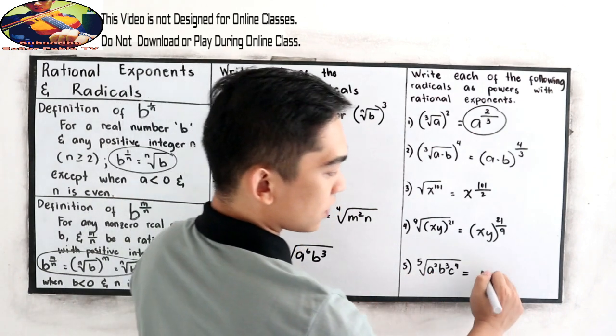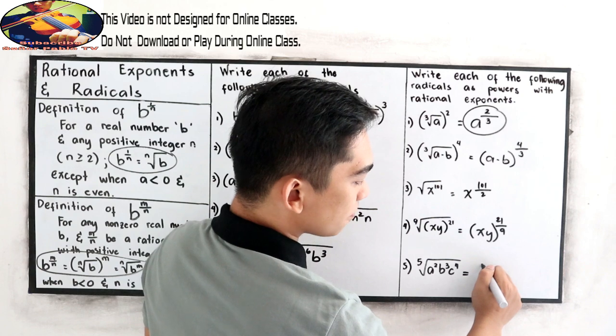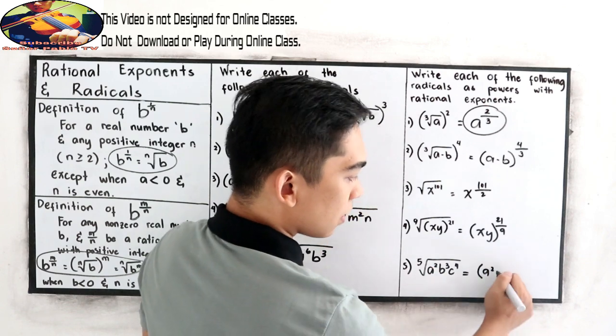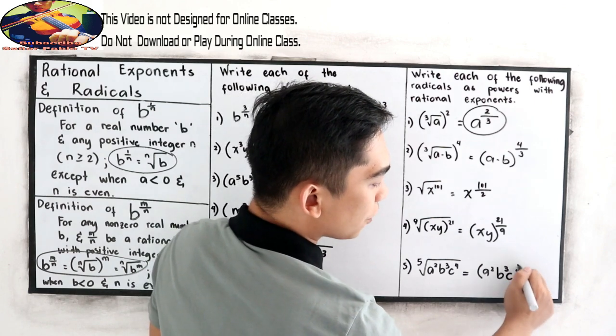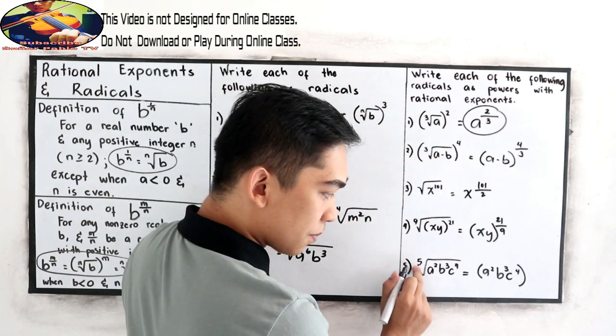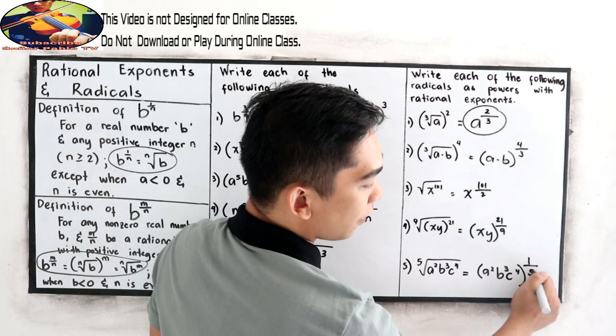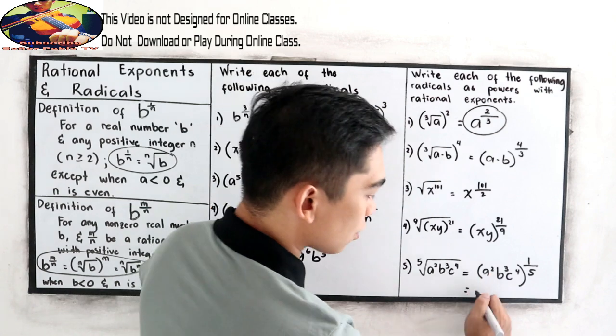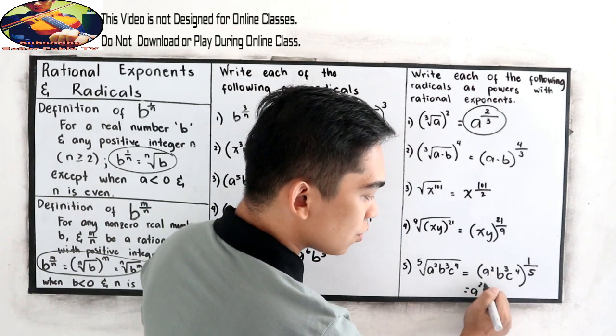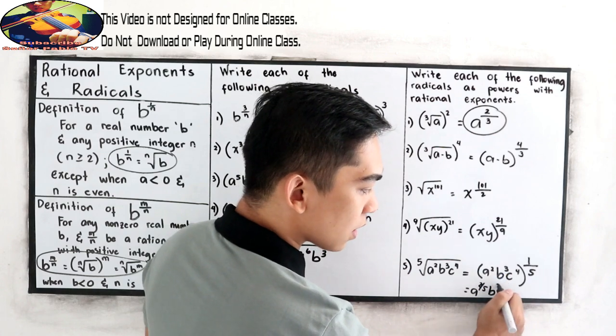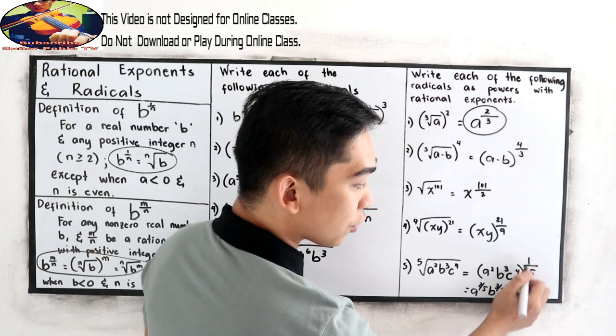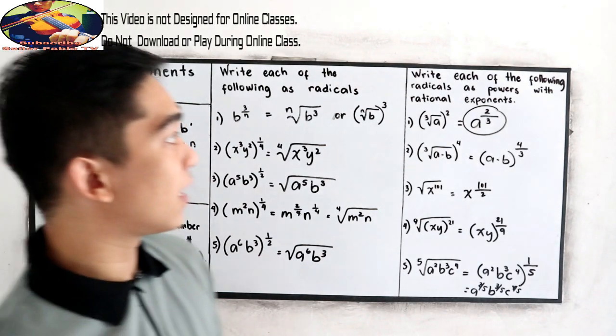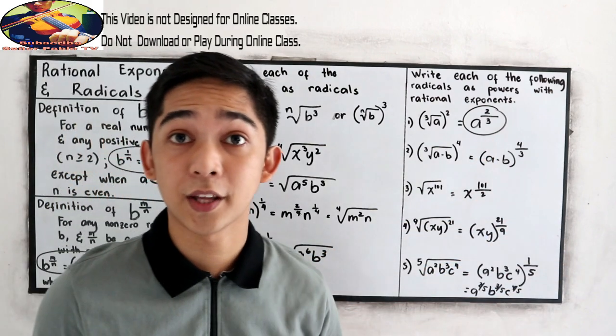And number 5, we have A squared B cubed C raised to 4. This will be our denominator, will be equal to 1 over 5. Or if you want, we can write that as laws of exponent. So A, 2 times 1, that is 2 over 5. B, 3 times 1, 3 over 5. And C, 4 times 1, 4 over 5. That will be the expression with the rational exponent, your final answer.